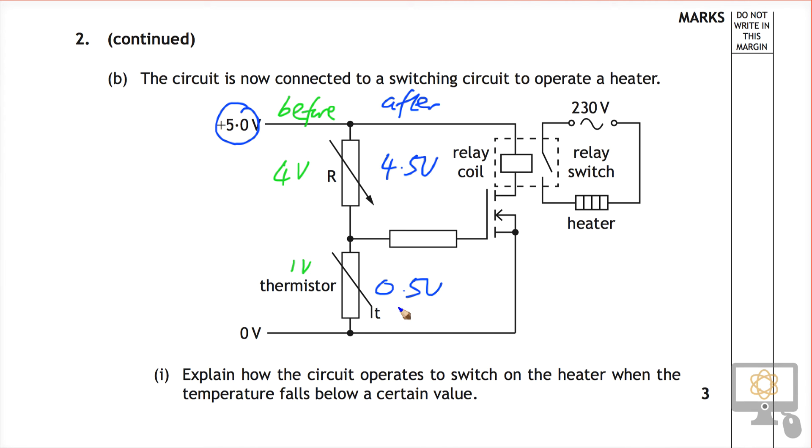What that means is that this voltage needs to rise even further than it did before. Before it only needed to rise 1 volt, now it needs to rise 1.5 volts. And so therefore, what needs to happen? If this voltage needs to rise, then this resistor needs to rise even more than it did before. And for the resistance of this to rise...